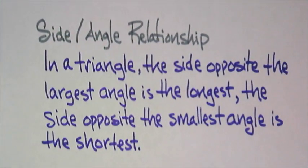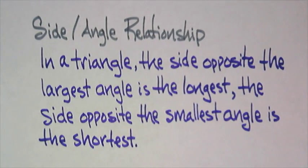So, what we call that, or what I'm going to call that, is called a side angle relationship. In a triangle, the side opposite the largest is the longest. The side opposite the smallest angle is the shortest. And, of course, the side opposite the middle angle is going to be the middle.